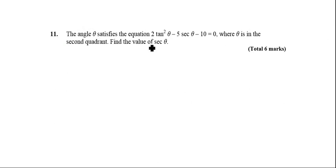And then the last question: I've got 2 tan squared θ minus 5 sec θ minus 10 is equal to 0. Okay, so whenever you get something like this with tans and secs, try and make them into the same trig thing. So in this case here, let's make them into secs.